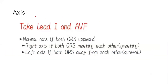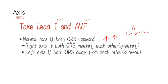For axis determination, in normal axis we see Lead I and AVF — both QRS complexes will be upward. Both QRS complexes upward means it is normal axis. The QRS complex in Lead I and AVF will both be upward for normal axis.